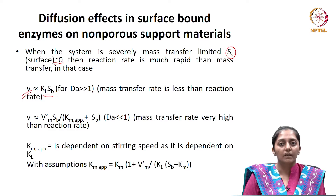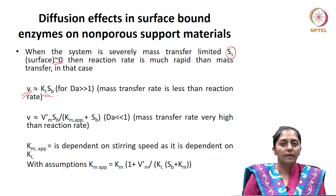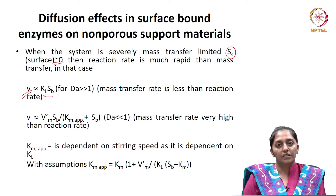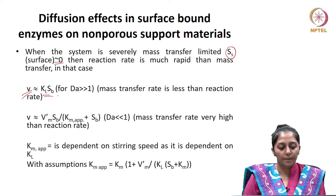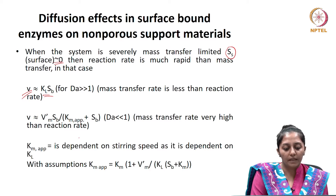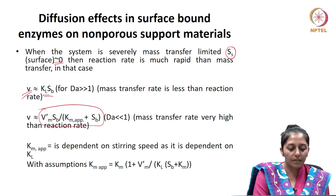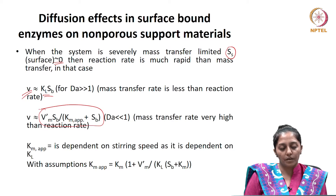If the Damköhler number is very low, the system is reaction-rate limited, meaning the mass transfer rate is very high relative to the reaction rate. The substrate concentration reaching the surface quickly becomes equal to the bulk concentration Sb. In this reaction-rate-limited case following Michaelis-Menten kinetics, the reaction rate is given by the Michaelis-Menten form with substrate concentration as Sb. Note that the apparent Michaelis-Menten constants depend on stirring speed and other operating parameters.